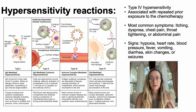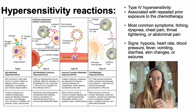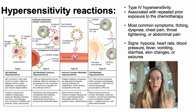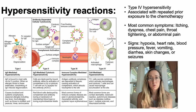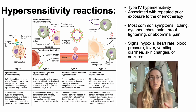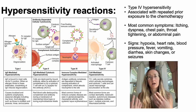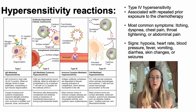So hypersensitivity reactions — most are delayed hypersensitivity reactions. As you can see in this picture, they are associated with a repeat or prior exposure to the chemotherapy. The most common symptoms will include itching, chest pain, trouble breathing, throat tightening, and abdominal pain. You can also see vital sign changes such as hypoxia, tachycardia, hypotension, fever, vomiting, and diarrhea.